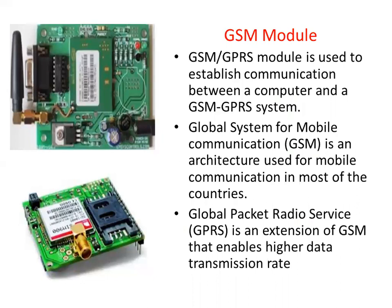Now we can see here the different GSM modules. A GSM or GPRS module is used to establish communication between a computer and a GSM/GPRS system. GSM — Global System for Mobile Communication — is an architecture used for mobile communication in most countries. GPRS — Global Packet Radio Service — is an extension of GSM that enables higher data transmission rates.